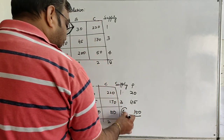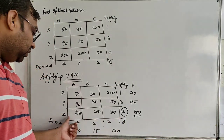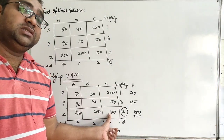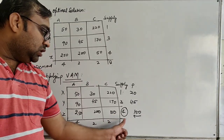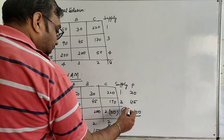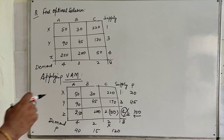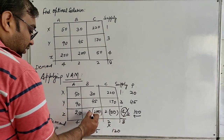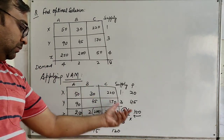We have to fulfill all the entries corresponding to this maximum penalty of 150. The supply for that row is 4. In this row (row Z), the lowest element is 50 — the corresponding demand is 2 and supply is 4 — so we put 2 here. The remaining supply is 2. Moving to the second lowest element in this row, which is 200, the corresponding demand and supply are both 2, so both are fulfilled. We leave these two columns and this row.